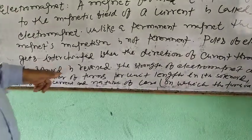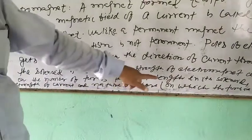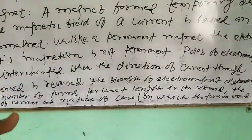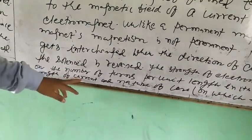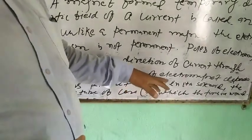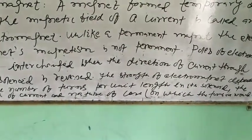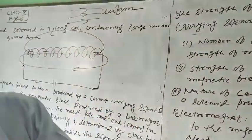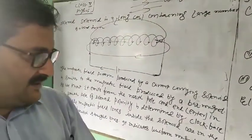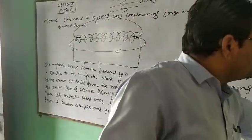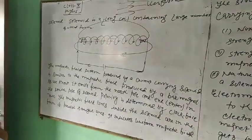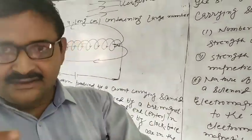The strength of an electromagnet depends on three things: first, the number of turns per unit length in the solenoid; second, the strength of the current; and third, the nature of the core material — that is, the material on which the turns are wound.